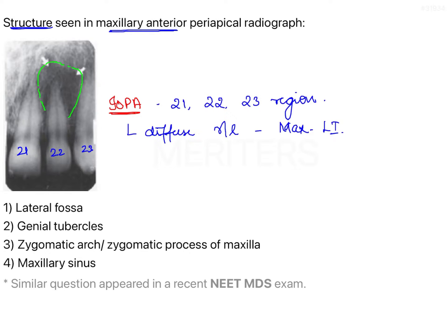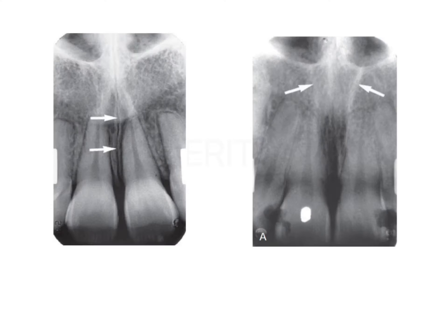The four options denote the normal anatomical landmarks of the jaws. Therefore, we should first be familiar with the normal landmarks that can be identified in a periapical radiograph. We are now going to focus mainly on the maxillary anterior IOPA.